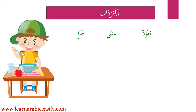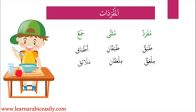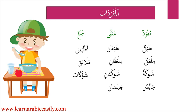Let's look at the singular, dual, and plural of some words. طَبَقٌ means 'a dish,' طَبَقَانِ means 'two dishes,' أَطْبَاق means 'dishes' (three and above). مِلعَقَةٌ means 'a spoon,' مِلعَقَتَانِ means 'two spoons,' مَلاعِق means 'three or more spoons.' شَوكَةٌ — شَوكَتَانِ — شَوكَات means fork, two forks, forks. جَالِسٌ means 'a person sitting,' جَالِسَانِ means 'two persons sitting,' جَالِسُون means 'three or more persons sitting' (masculine).